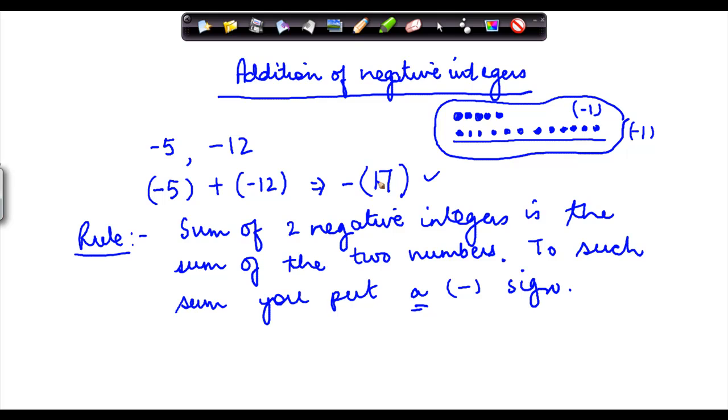So that's how you do the total when you have negative integers, when both the integers are negative.